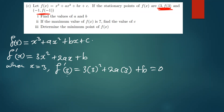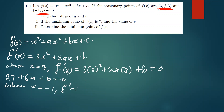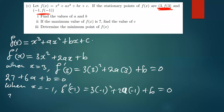Simplifying: 3² gives 9, times 3 gives 27; two times 3 gives 6a; so we have 27 + 6a + b = 0. For the second stationary point where x = -1, f'(-1) = 3(-1)² + 2a(-1) + b = 0, which simplifies to 3 - 2a + b = 0.